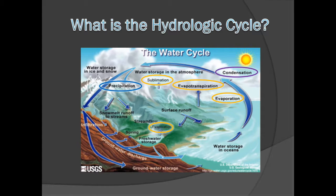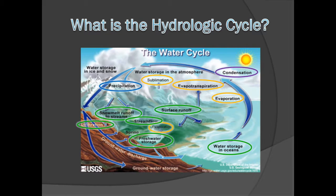The precipitation either becomes runoff, part of stream flow, or surface water storage, or infiltrates into the groundwater storage. Notice that the groundwater either discharges into the streams, ponds, and lakes, or the ocean. Then the cycle begins again.